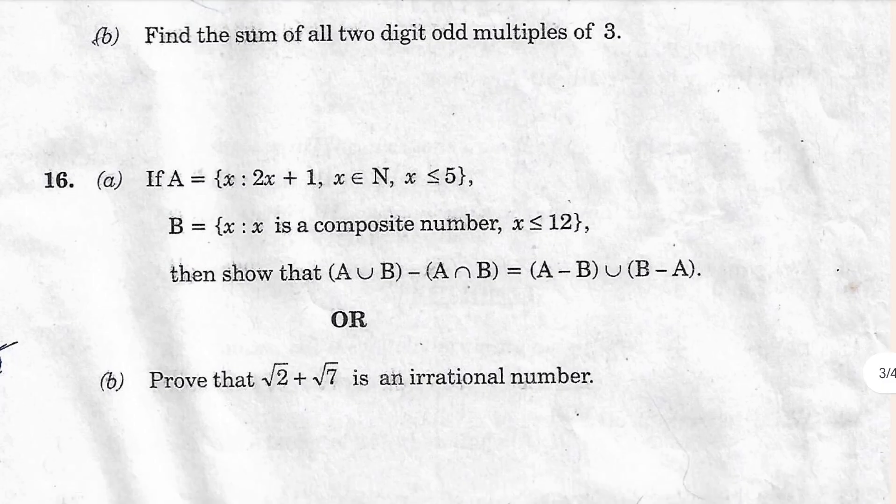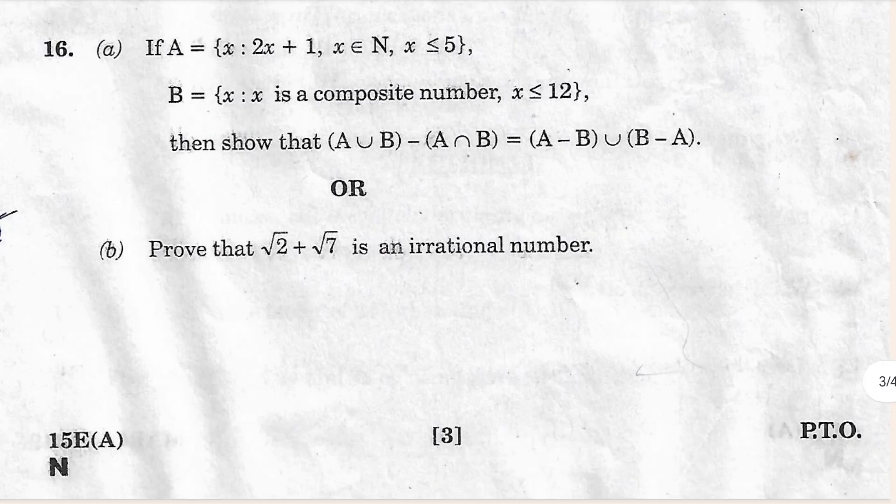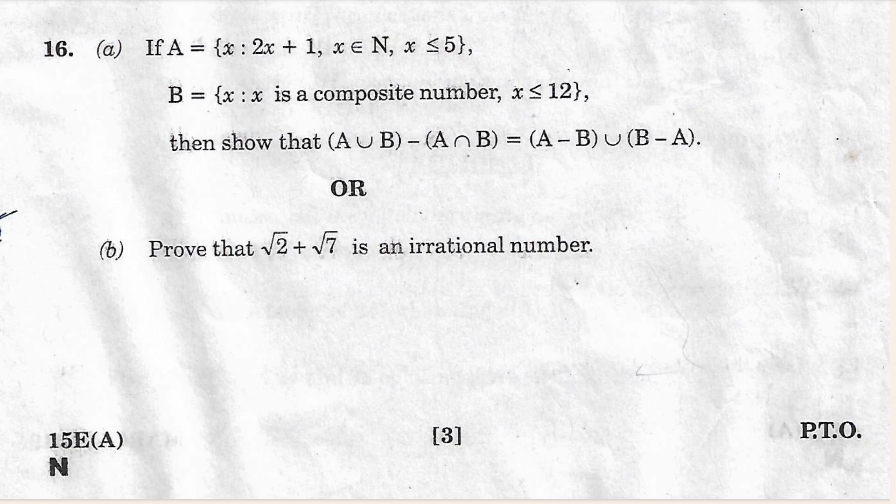If it is clear, then just see question 16. Question 16 is also important. It is from the set chapter. Part B is also very important: prove that 2 + √7 is irrational.